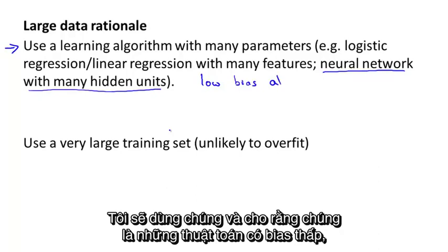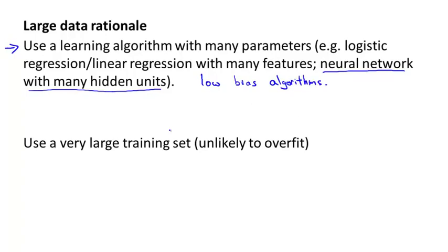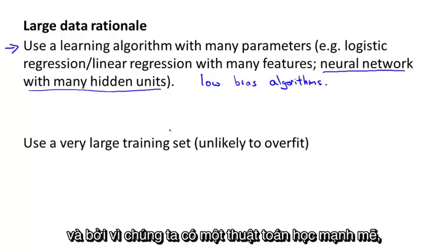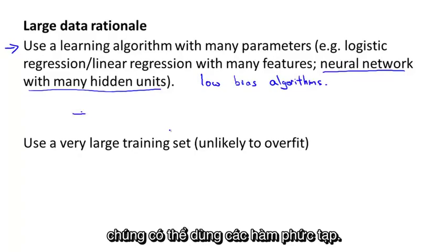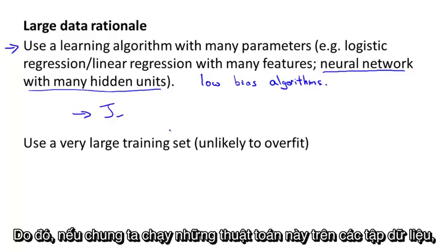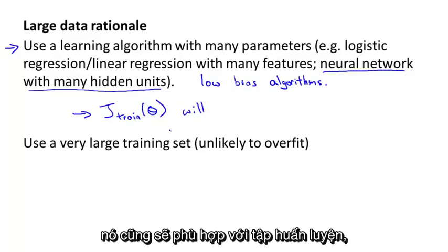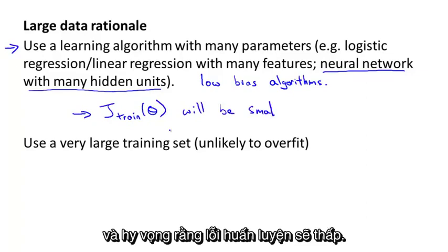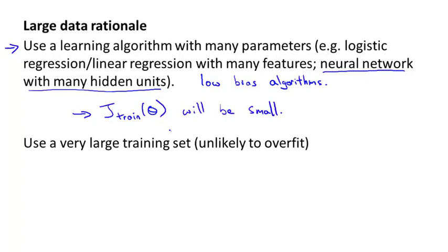That would be another learning algorithm with a lot of parameters. So these are all powerful learning algorithms with a lot of parameters that can fit very complex functions. So I'm going to call these, we're going to think of these as low bias algorithms, because they can fit very complex functions. And because we have a very powerful learning algorithm that can fit very complex functions, chances are, if we run these algorithms on a data set, it will be able to fit the training set well. And so hopefully the training error will be small.